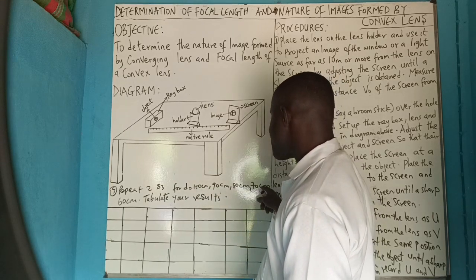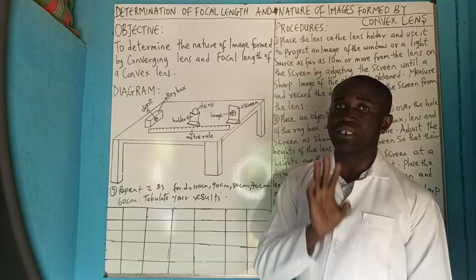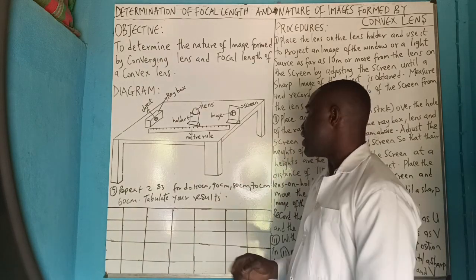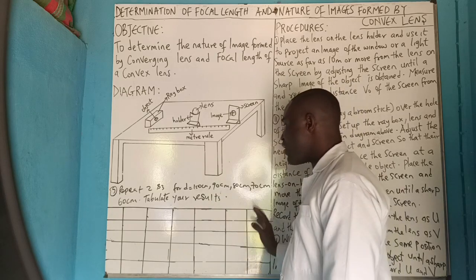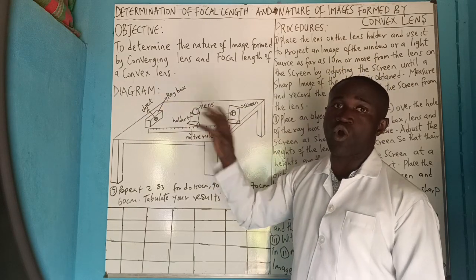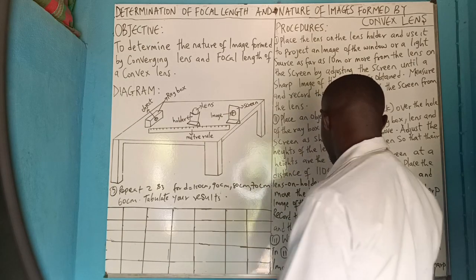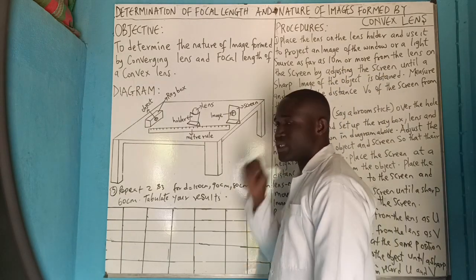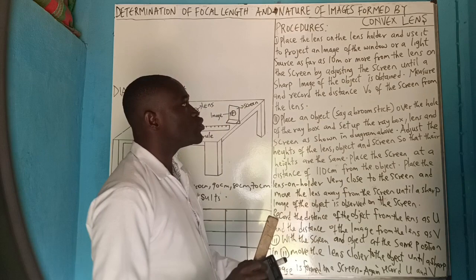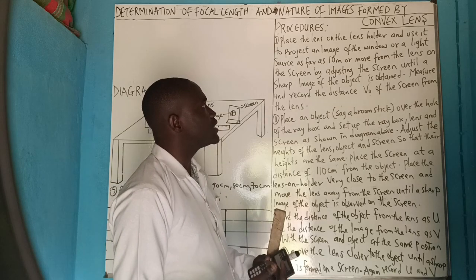Repeat for d equals 90 cm, 80 cm, 70 cm, and 60 cm, then tabulate your results. Now the essence of this experiment today is to see how you can perform this without touching the apparatus — we call it 'operation don't touch apparatus.' We want to go into how to get our table of values without bringing the equipment out. The essence of the first procedure is for us to get our v₀, which will be the focal length of the convex lens.